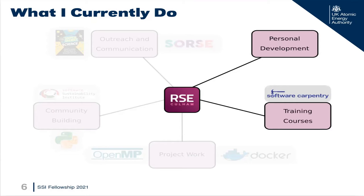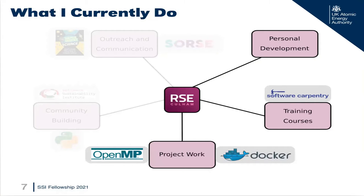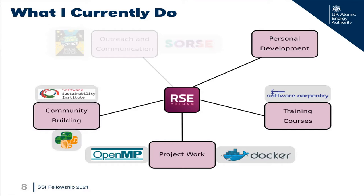Part of this happens through the Software Carpentry workshops that I help run with colleagues about once a quarter, supplemented by a software best practices course that we've developed in-house. The bulk of my time is spent doing project work for research groups within our organization to help them develop better software. Some examples of my work are adding OpenMP capability and containerizing existing code bases.